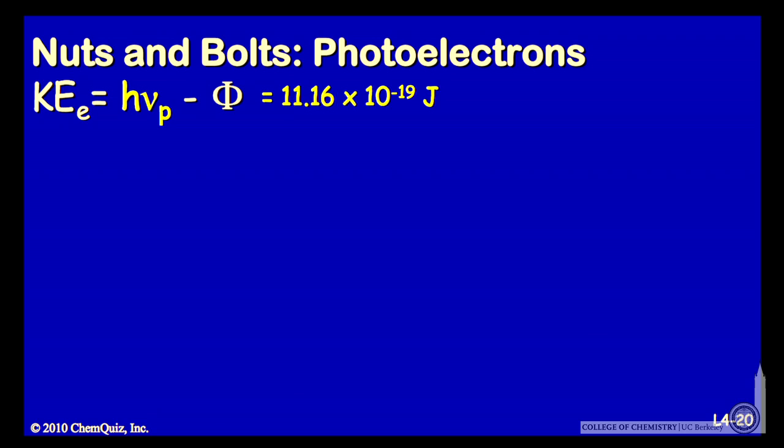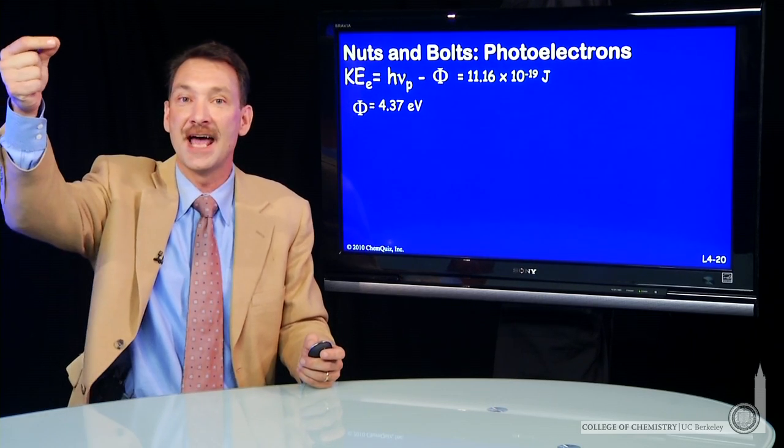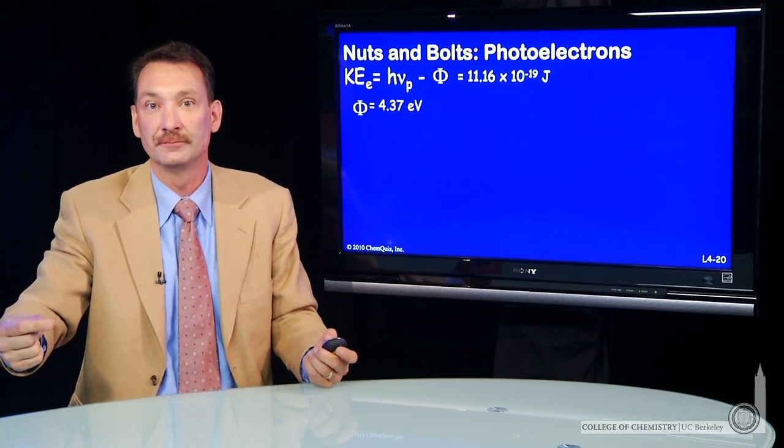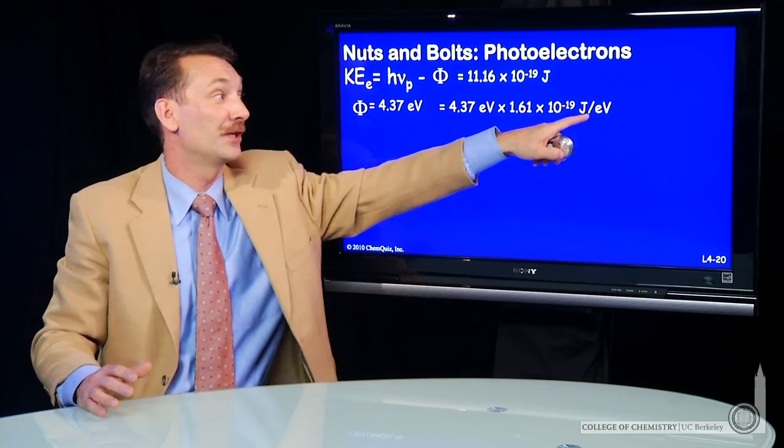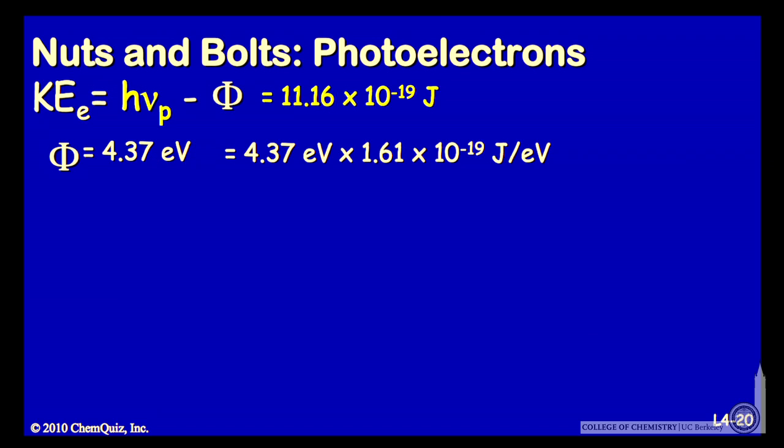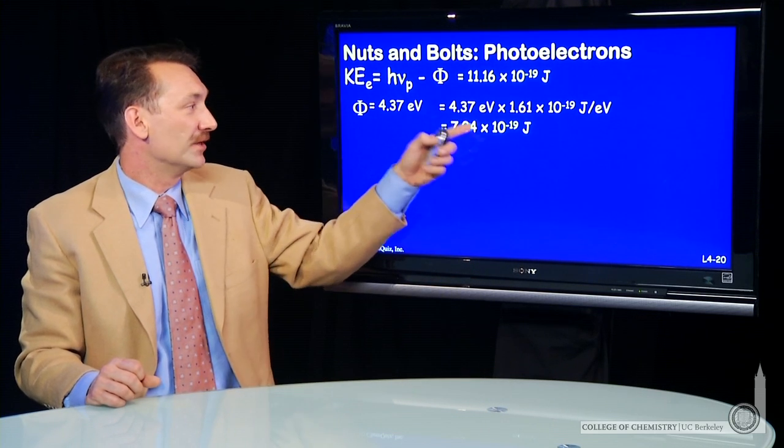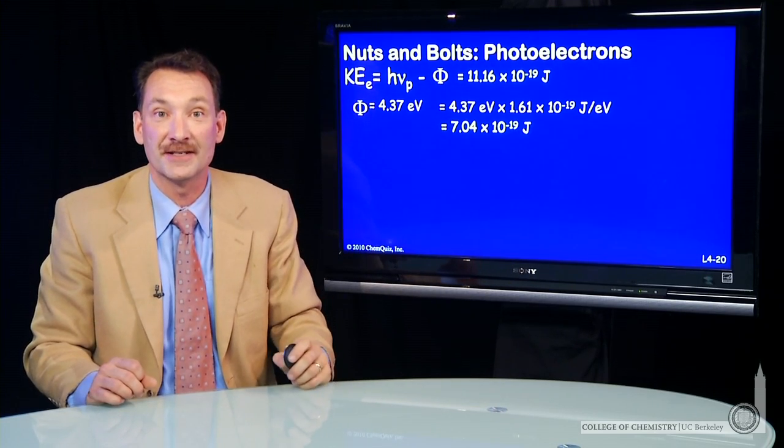So with that kinetic energy, we can continue to balance our energy. We know that kinetic energy is 11.16 times 10 to the minus 19 joules. The work function we've been given, that's 4.37 electron volts. Now, electron volts is a unit of energy, it's the kinetic energy that an electron gains as you accelerate it across a potential of 1 volt. We don't have to know that, but it is nice to know that I can convert joules to electron volts with a simple conversion factor I can look up in any textbook. 1.61 times 10 to the minus 19 joules per electron volt. So we can do that product. So the work function in terms of joules, 7.04 times 10 to the minus 19 joules.